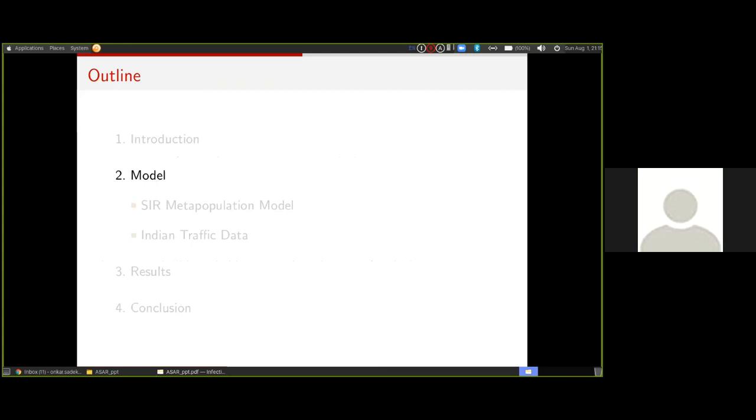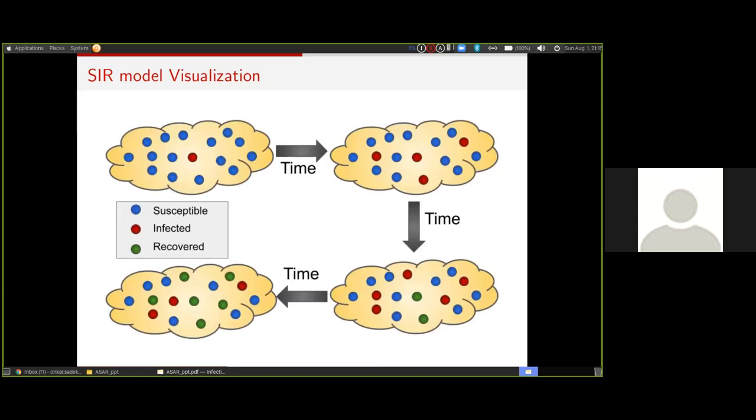First, we consider the SIR model. If you are aware of the news and some of the public papers which became quite famous in the past few months, the SIR model is a very well-known figure amongst them. SIR model is a compartmental model where we assume that all individuals in a given geographical location are divided into either of these three compartments: Susceptible, Infected, or Recovered. That's where S-I-R comes from. They can jump from one compartment to another at some rate.